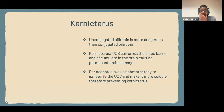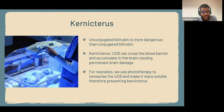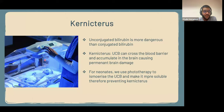For neonates, we use phototherapy to isomerize the unconjugated bilirubin and make it more soluble so it can be excreted more easily and won't cross the blood-brain barrier. If neonatal jaundice persists for a certain amount of time and is severe, something is wrong and you need to solve this jaundice immediately before it causes kernicterus — it is very time sensitive. We put the babies under UV light, which isomerizes the bilirubin, making it more soluble and easier to excrete.